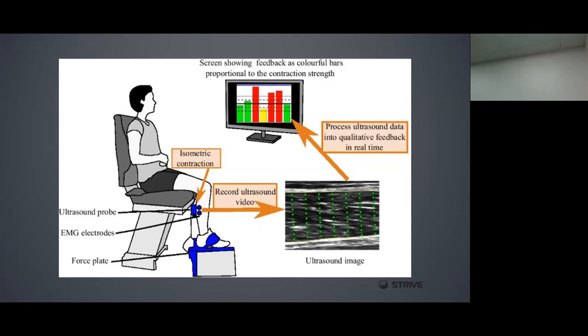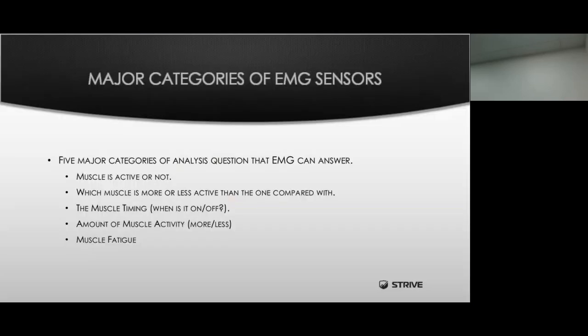One of the biggest benefits of EMG sensors is that huge feedback component — you're able to objectively see what is happening within that muscular output as the athlete or patient is producing that force, and we can verify whether we're creating what we want to create. There are generally five major categories that we can identify or utilize for EMG sensors.